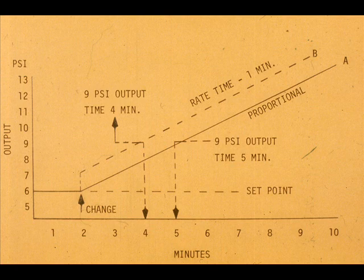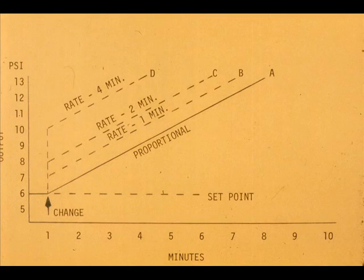At time five minutes, the proportional output is nine PSI. A rate time of one minute gives the same nine PSI at time four minutes. Curves B, C, and D show the controller output with different rate times. Each is compared to the proportional output curve A. It is obvious that a low rate time denotes less rate action.